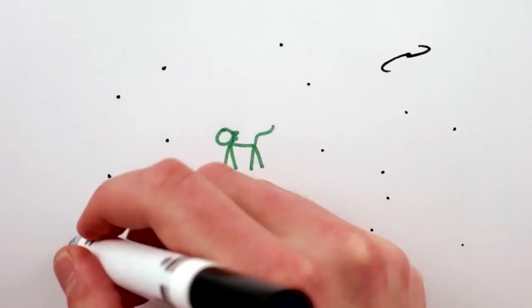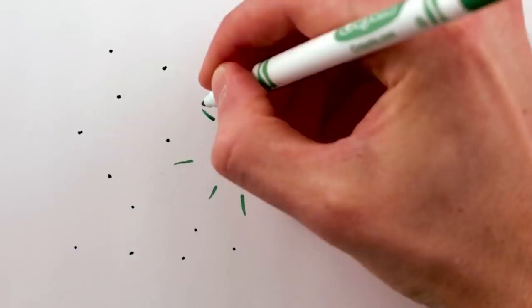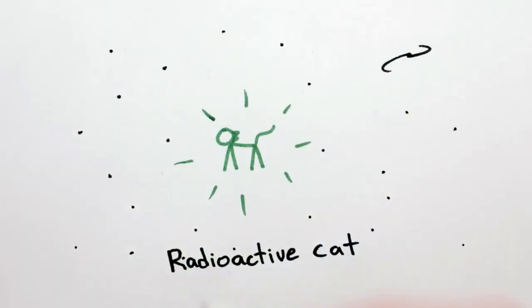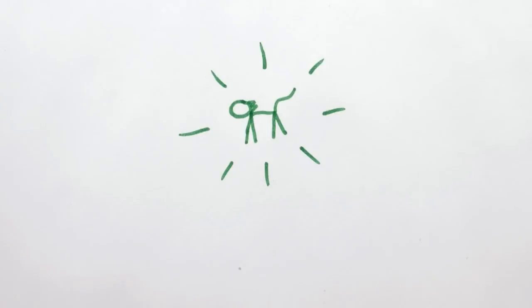Suppose you're watching a cat float freely in empty space, when suddenly it emits a flash of light in all directions. The light carries away some energy, we'll call it E, so by conservation of energy, the cat must have lost energy E. But since the light was emitted symmetrically in all directions, it won't have changed the cat's velocity. So where did the energy for the light come from?